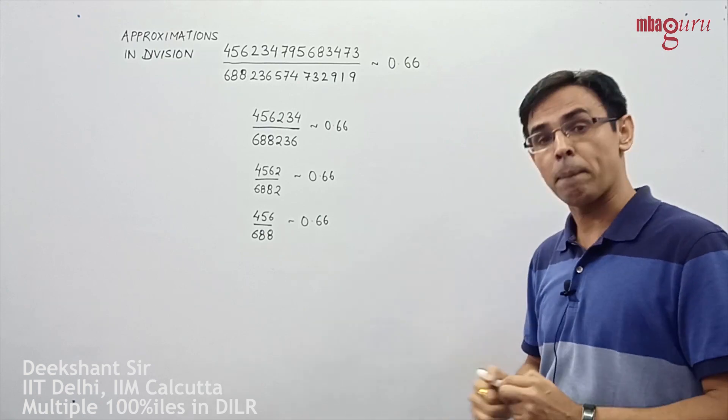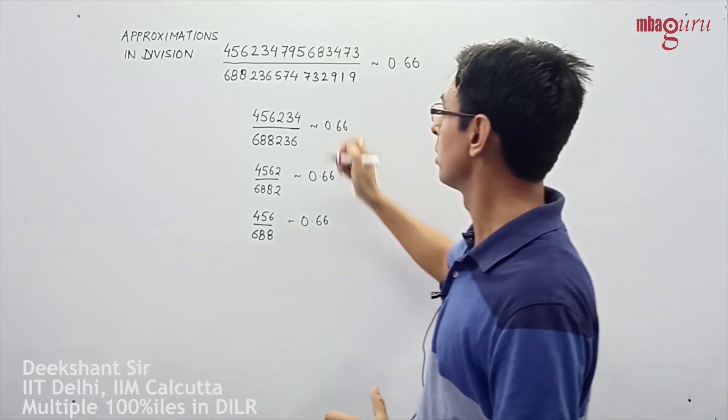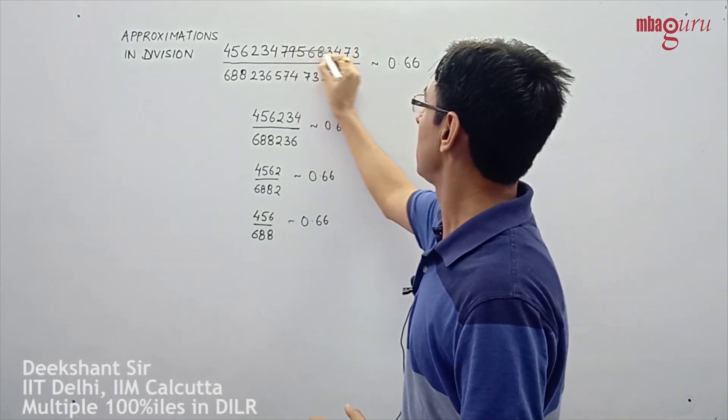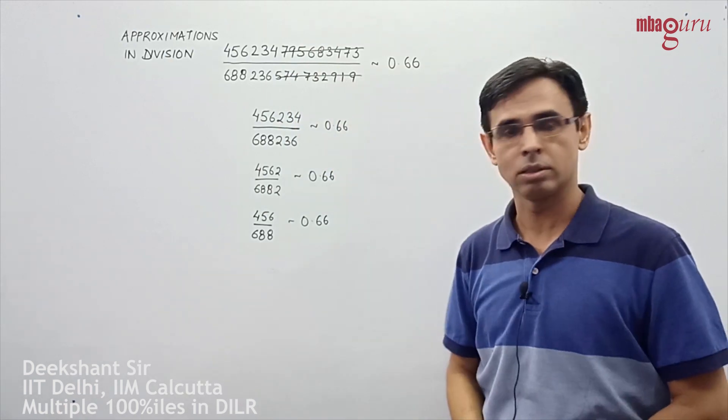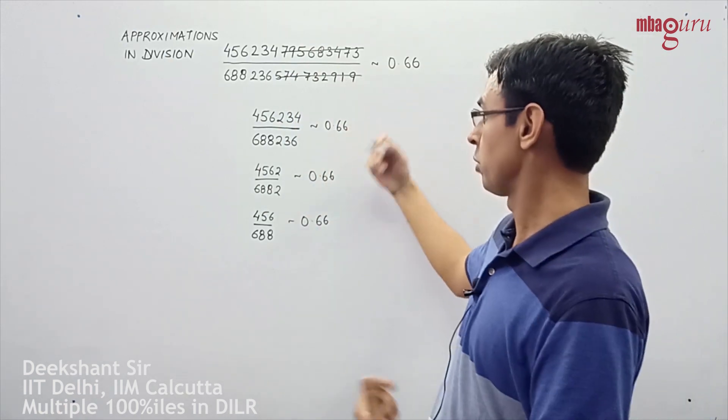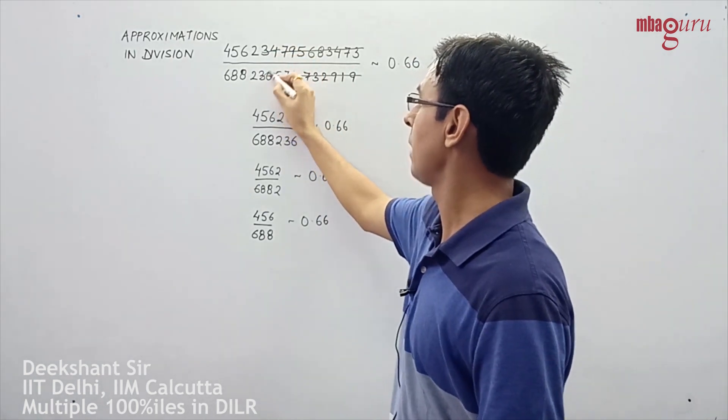What is happening here is that in this case, I have simply removed the last nine digits of this number and the last nine digits of this number. When I moved here, I have removed two more digits from the numerator and the denominator.